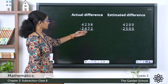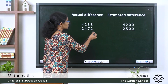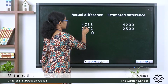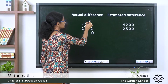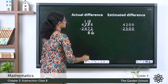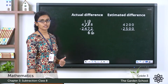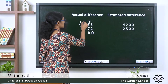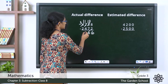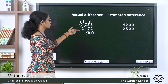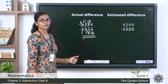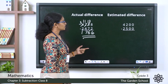Let's find the actual difference first. 8 minus 2 is 6. 3 minus 7 — we can't do that, so we borrow: 13 tens minus 7 tens is 6 tens. 1 minus 4 — we borrow again: 11 hundreds minus 4 hundreds is 7 hundreds. 3 thousands minus 2 thousands is 1 thousand. So the actual difference is 1766.